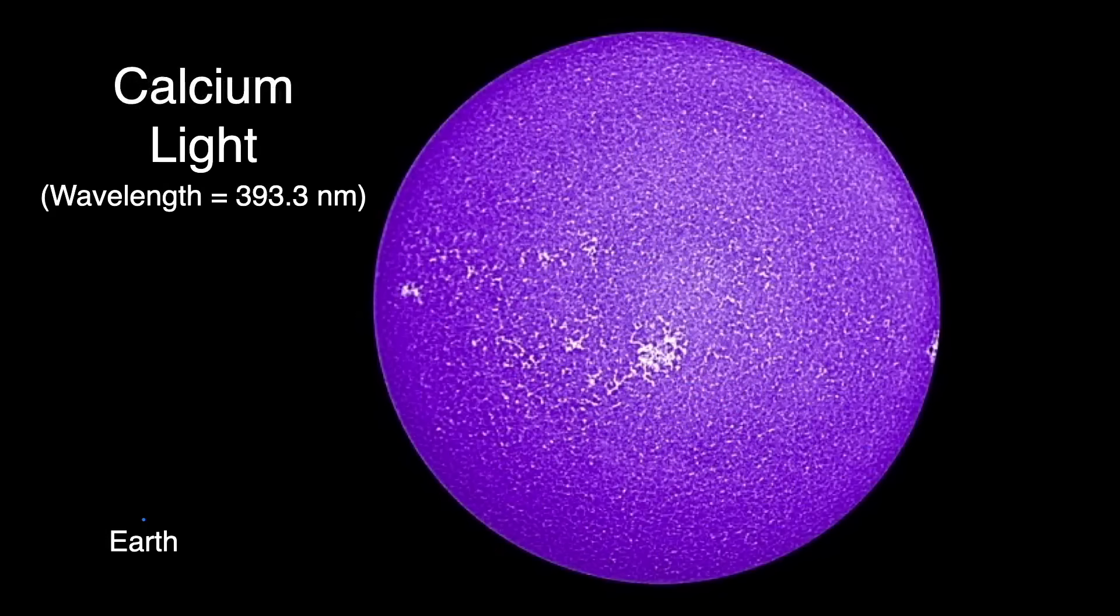At the extreme violet end of the spectrum, special filters can pick out a color of light only given off by calcium atoms in the solar atmosphere. This gives a view a bit deeper into the solar atmosphere than the hydrogen alpha filter.